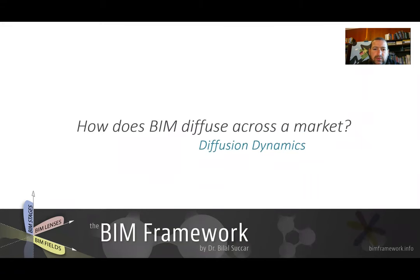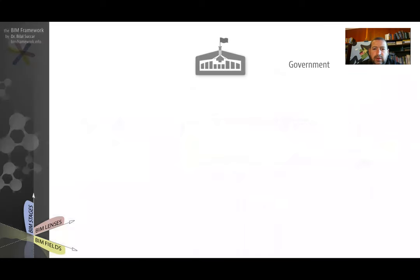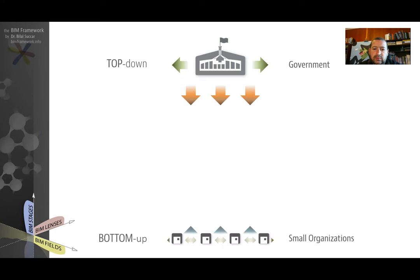So how does BIM diffuse across a market? Let's look first at the major diffusion dynamics. If we look at a market, government within a market and authority, typically diffusion dynamic forced by a government is referred to as a top-down diffusion dynamic, while diffusion led by small organizations is typically referred to as a bottom-up diffusion dynamic.